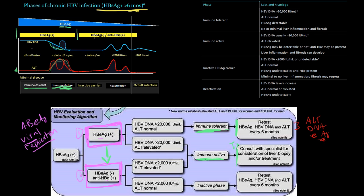If a patient is in the second category — hepatitis E antigen negative — they can be in an inactive carrier state. In that state, ALT is nice and low, there's no inflammation or fibrosis, nothing actively going on, and DNA levels are pretty low as well. When inactive, we're just monitoring every six months, repeating the three key lab tests, and seeing how the patient is doing.